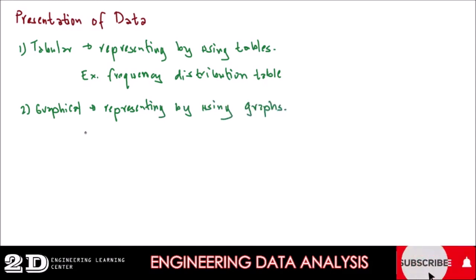It could be a histogram, we could have a line graph, we could also have a pie chart, and also we have the polygon curve.